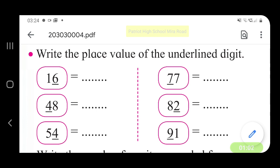In 54, 4 is in units place, so the place value of 4 is 4.